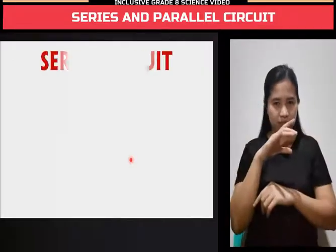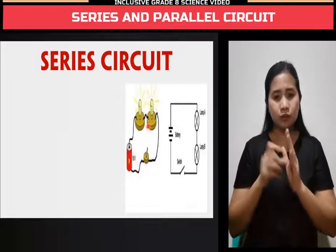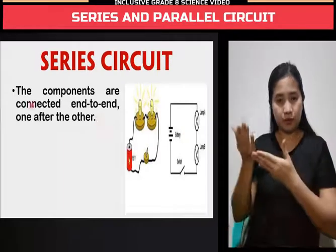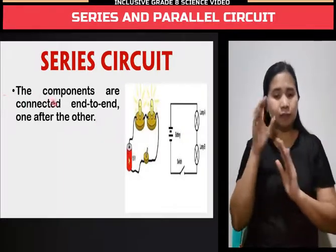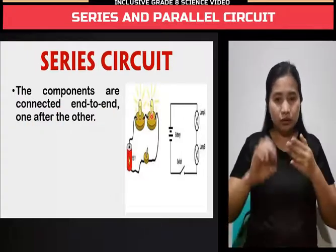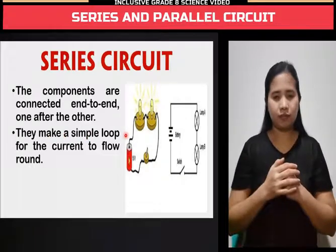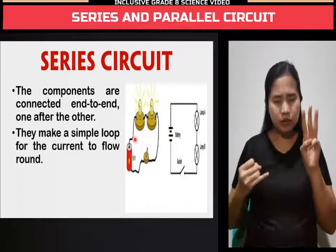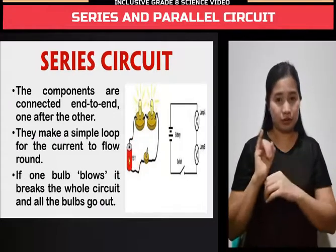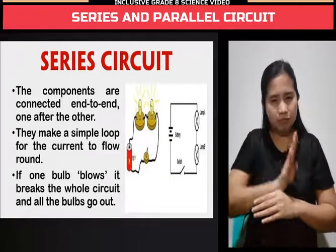Here are other definitions of series circuit. This is the picture and this is the schematic diagram. Number 1: The components are connected end-to-end, one after the other. Next, they make a simple loop or a single path for the current to flow around. Next, if one bulb blows, it breaks the whole circuit and all the bulbs go out.